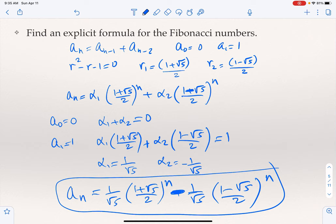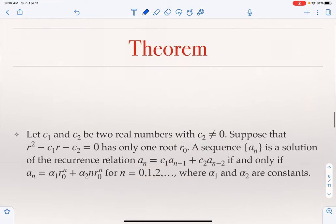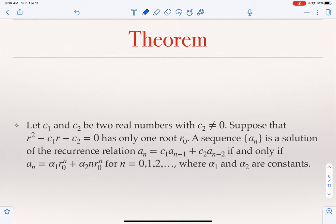The theorem we saw covered the case of two distinct roots. But sometimes the characteristic equation has only one (repeated) root R0. In that case, the solution to the recurrence becomes A_n = α1·R0^n + α2·n·R0^n, and this must hold for every n = 0, 1, 2, and so on.